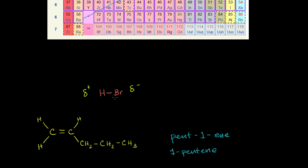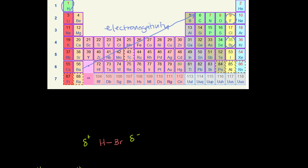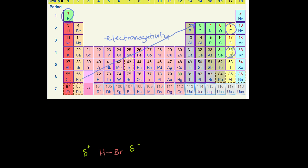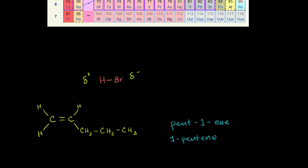Whenever you do these reactions, it's useful to draw all of the valence electrons. Bromine has an atomic number of 35, which means it has 35 electrons in its neutral state. It's in group number seven, so it has seven valence electrons. Let me draw them: one, two, three, four, five, six in lone pairs, and then the seventh is in the bond with the hydrogen. Hydrogen obviously has one electron, right there. So these two guys are bonding with each other, sharing a pair, which gives a lower energy level and makes it more stable — that's why the bond forms.